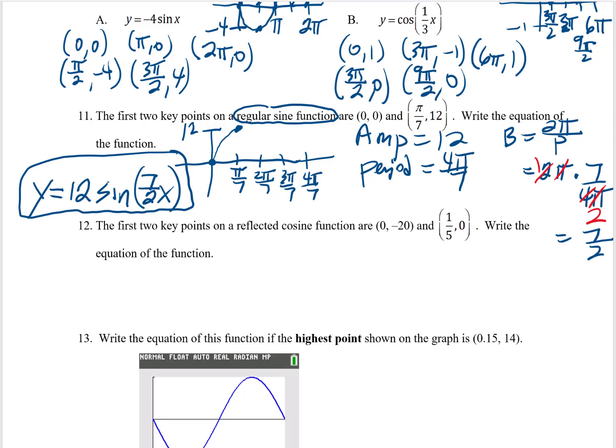Problem number 12 is very similar. Instead of having a regular sine, we have a reflected cosine. That's the ghost. My first key point is down here at 0, negative 20. And I know that reflected cosine starts at the bottom. My very next key point is here at 1 fifth 0. And so, again, here's the start of that ghost.